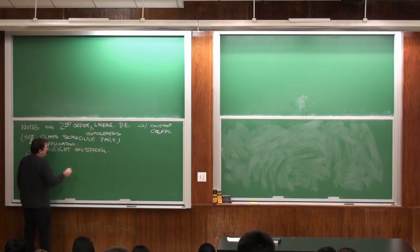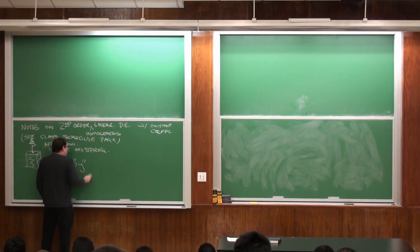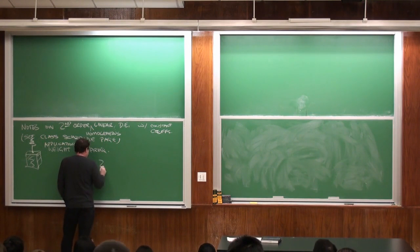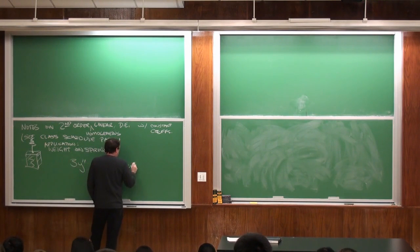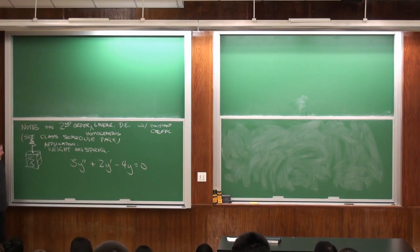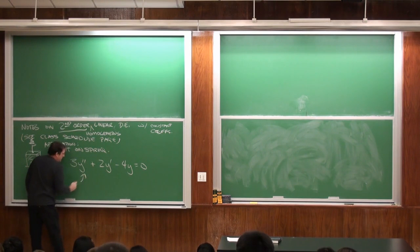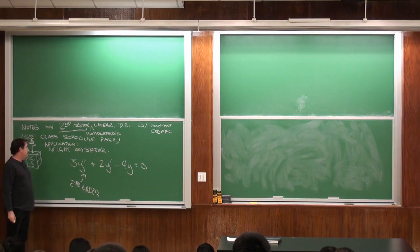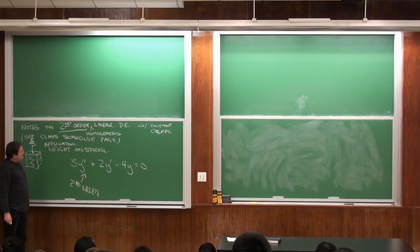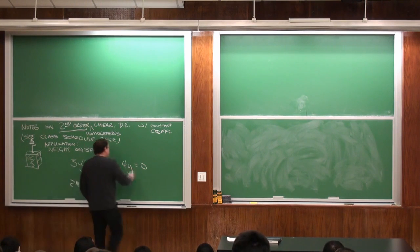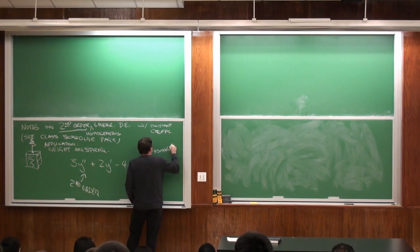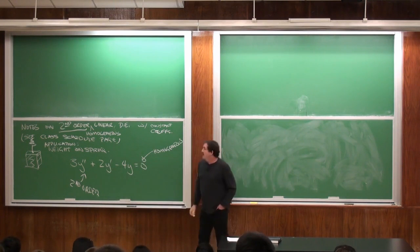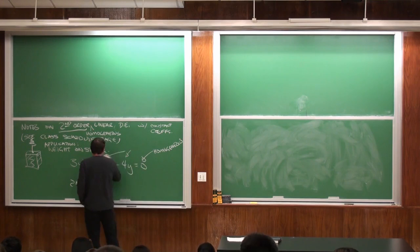The kinds of differential equations we're looking at are things like 3y'' + 2y' - 4y = 0. This is called second order because of the second derivative involved. Homogeneous means it equals zero. Constant coefficients means these are numbers instead of functions of x.